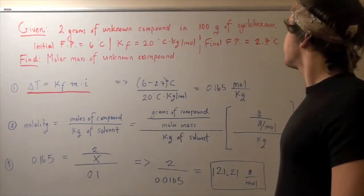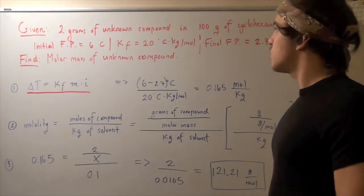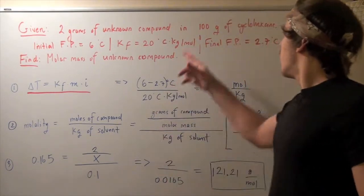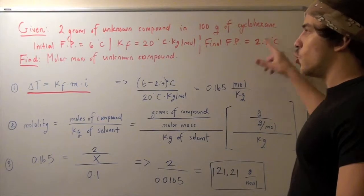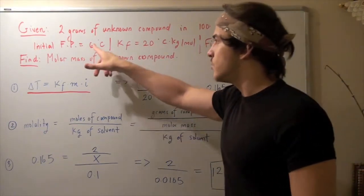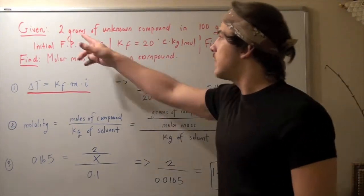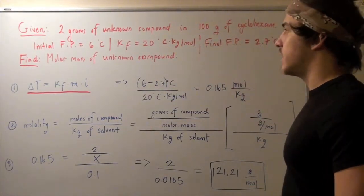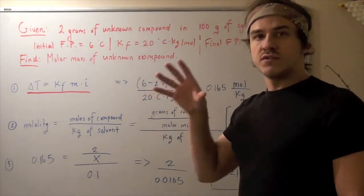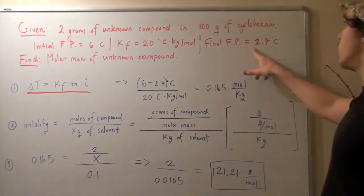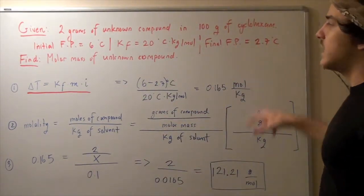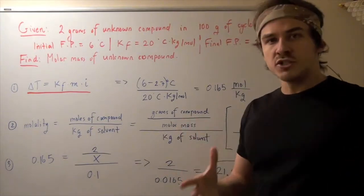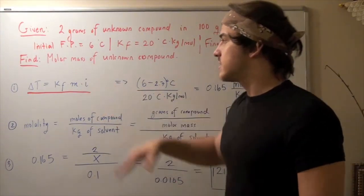Now, so we basically start with 100 grams of cyclohexane, which freezes at 6 degrees Celsius. We add 2 grams of unknown compound to our beaker of 100 grams of cyclohexane, and that solution's freezing point drops to 2.7 degrees Celsius. Now our goal is to use the freezing point depression formula to find the molar mass.